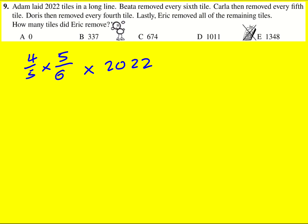Then Doris removes every fourth tile, so there'll be three-quarters left. So we can just set up this little calculation, but rather than figuring it all out multiplying it out together, I can actually cancel lots of these things out. So I can cancel out the fives if I times by five and divide by five, then nothing's happened. And the same with the fours. Three over six is just a half, so I'm actually finding a half of 2022.